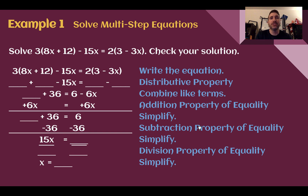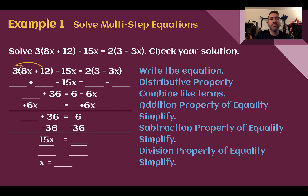Example 1, solve multi-step equations. Solve 3 times the quantity 8x plus 12, take away 15x, equal to 2 times the quantity 3 minus 3x. Check your solution. First we've written our equation and we see the grouping symbols — our parentheses. We're going to get rid of them using the distributive property. So if I had three groups of 8, I would have 24x, and if I had three groups of 12, I would have 36.